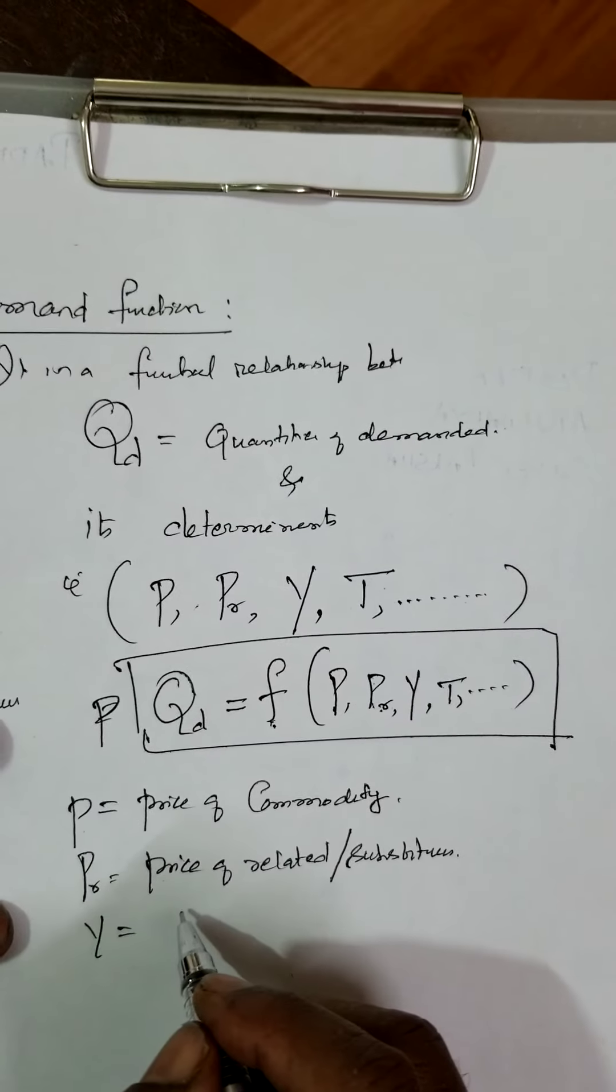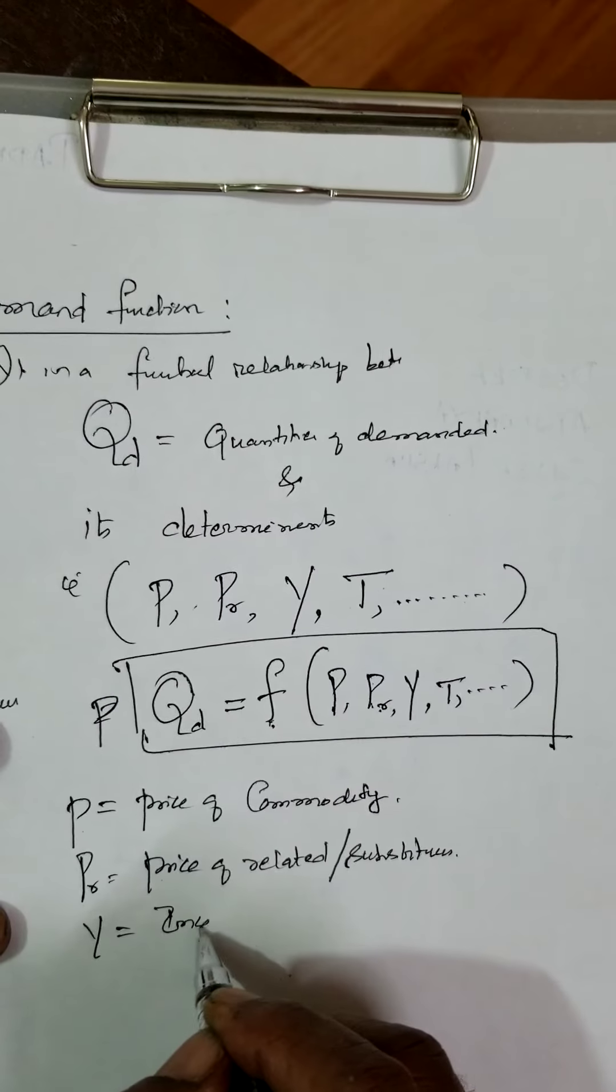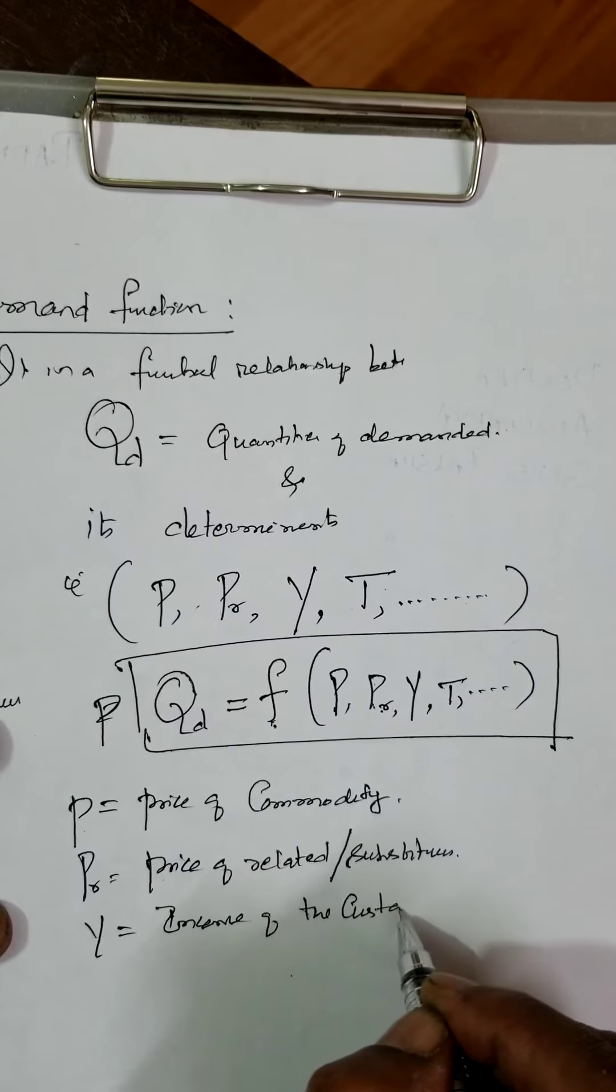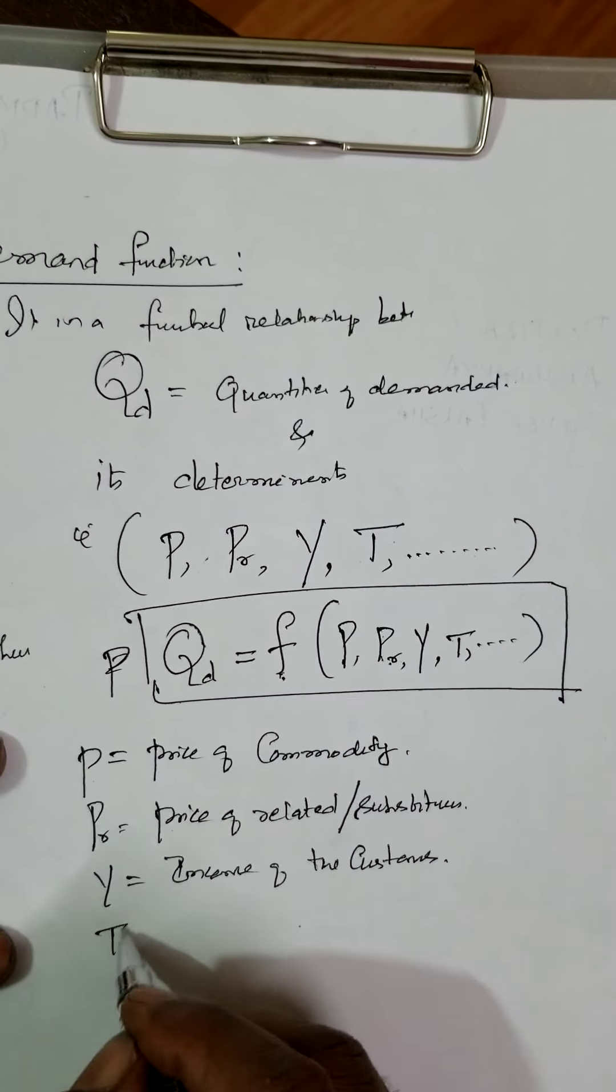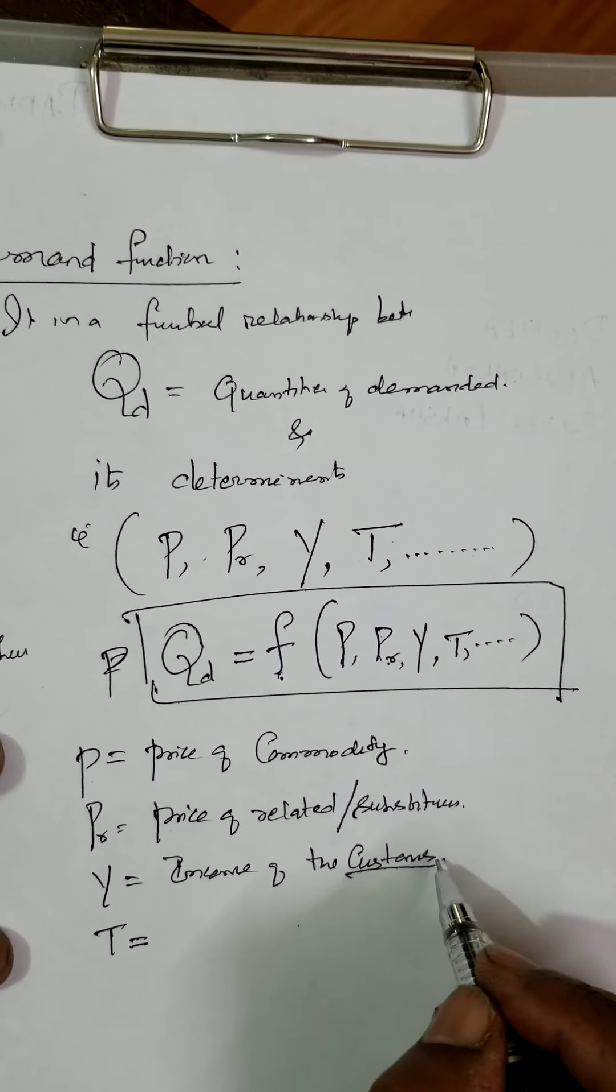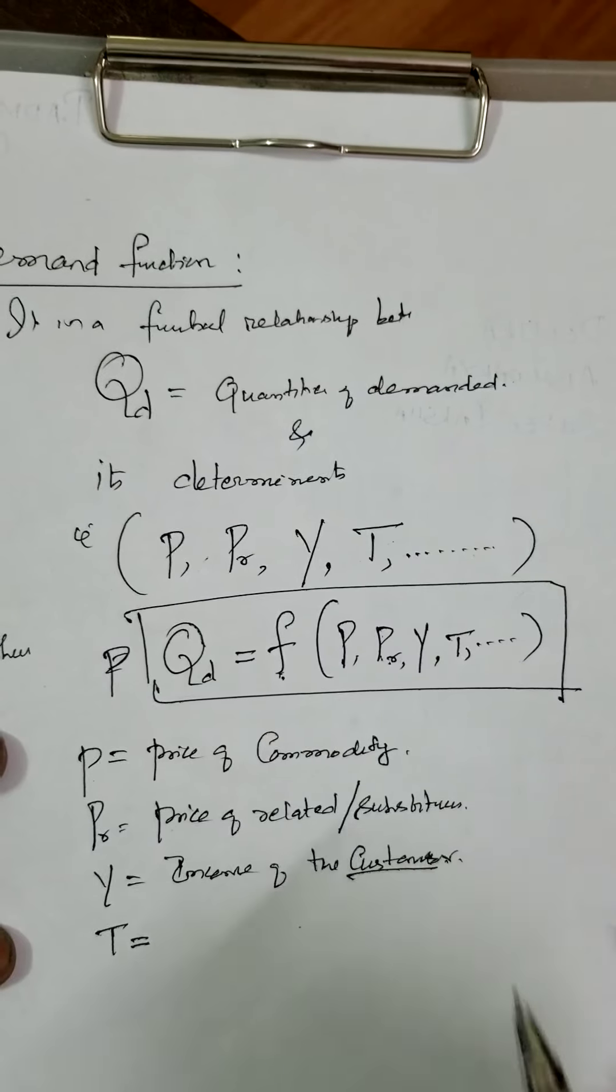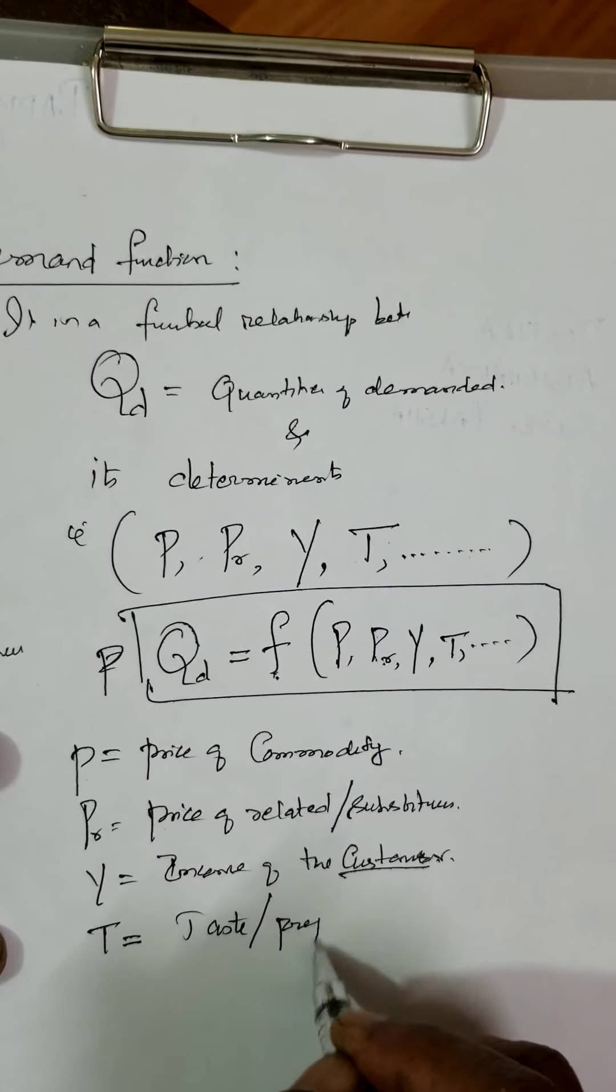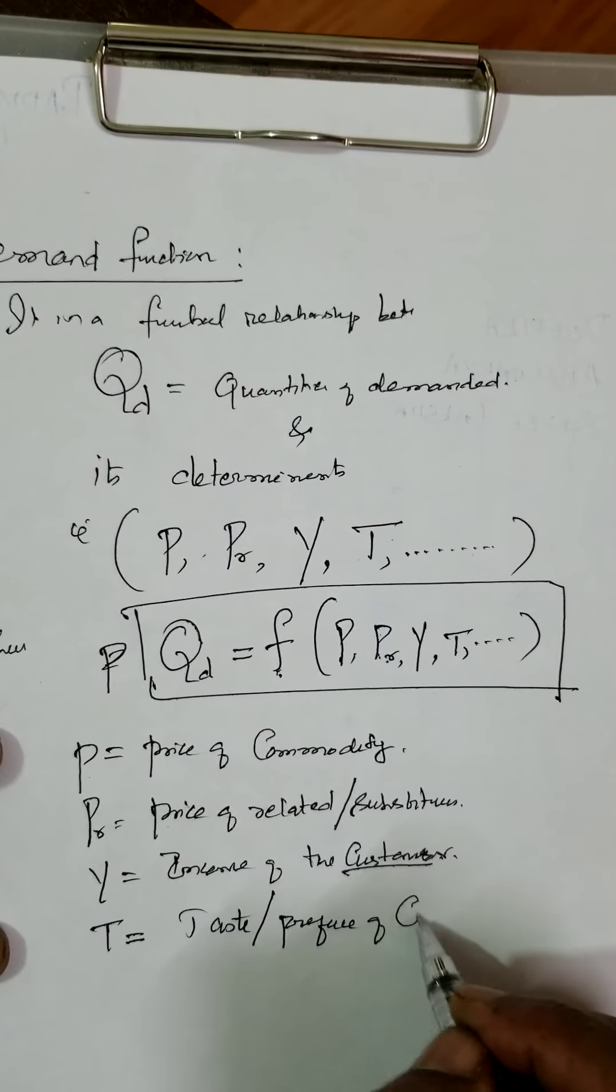Then, Y is income of the consumer. And T is the taste or preference of consumer.